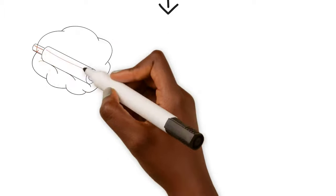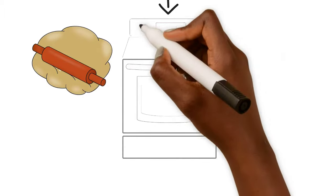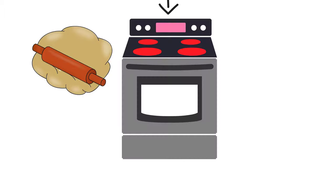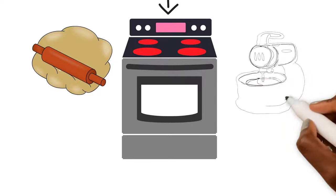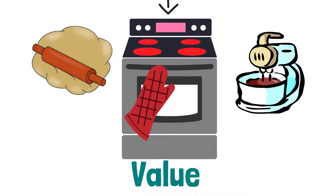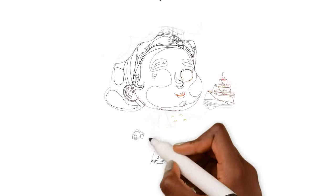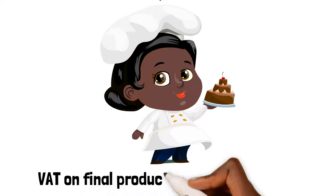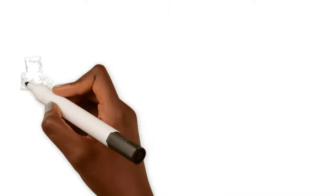When value has been added to the product or service by either transforming it to a consumable product, an assembled part, or bringing it closer to the final consumer, it is sold at a price which includes a VAT known as Output VAT.